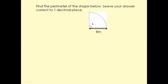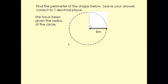Now have a look at this question. It says find the perimeter of the shape below, and in this case they want us to leave the answer to one decimal place. Now they have given us the radius of a circle which is 8 meters. You double the radius to find the diameter first — double 8 is 16, so the diameter is going to be 16 meters.